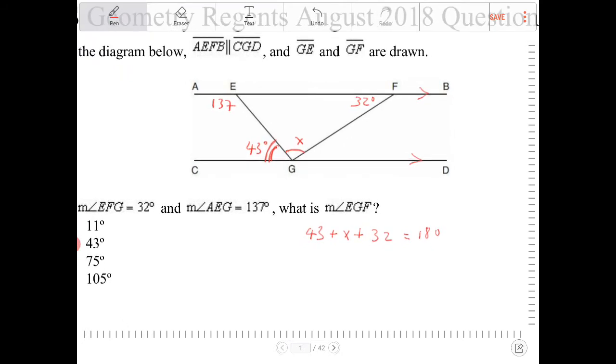So 43 plus 32, that is 75, so X plus 75 is equal to 180. Let's subtract both sides by 75, we get 105.